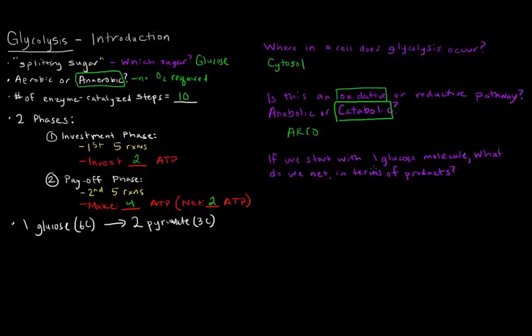Now, if we start off with one glucose molecule in glycolysis, and that one glucose molecule goes all the way through, what do we net in terms of products? So what are the products of glycolysis given one glucose molecule? Well, one of our products, of course, is that we get two pyruvates.